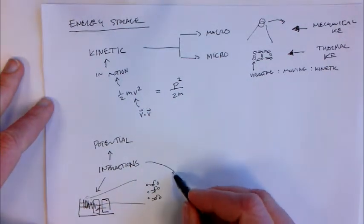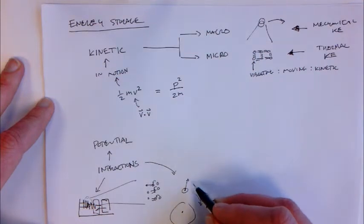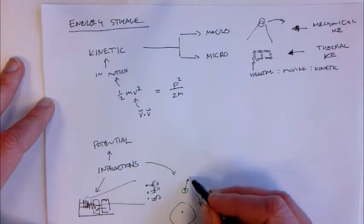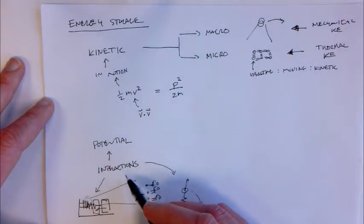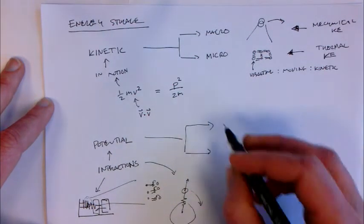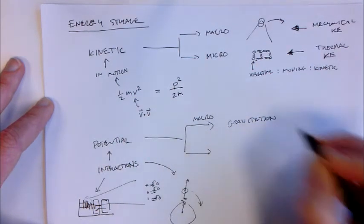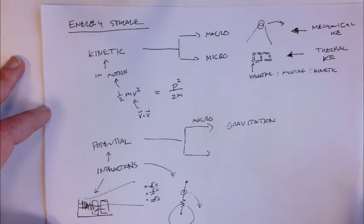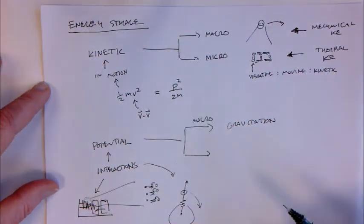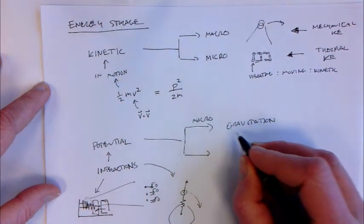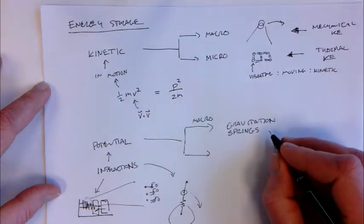By the same token, when the moon orbits the earth, there is energy stored in the interaction between the moon and the earth. If you tried to pull the moon away, you'd have to put energy into the system — you'd be stretching that interaction spring connecting the moon to the earth. So potential energy is energy stored in interactions, and you can think about it at both a macroscopic and microscopic level. At the macroscopic level, examples include gravitational interactions — a ball that's dropped converts gravitational potential energy into kinetic energy — as well as springs providing elastic energy storage, and electromagnetic forces.